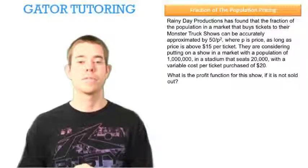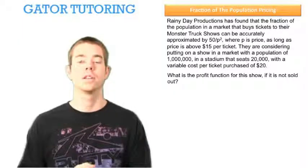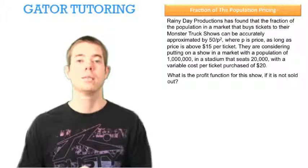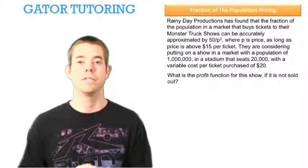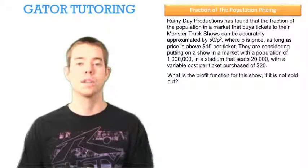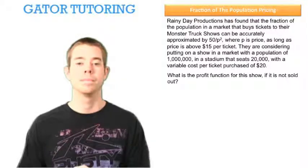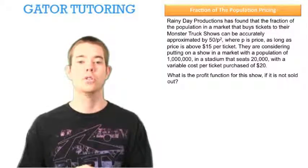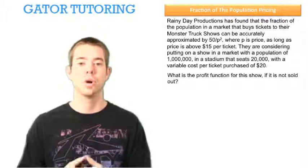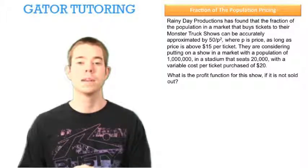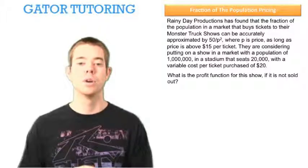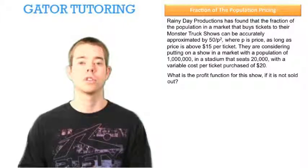Rainy Day Productions has found that the fraction of the population in a market that buys tickets to their monster truck shows can be accurately approximated by 50 divided by P squared, where P is price, as long as price is above $15 per ticket. They are considering putting on a new show in a market with a population of 1 million people, in a stadium that can seat up to 20,000 people, with a variable cost per ticket purchased of $20.